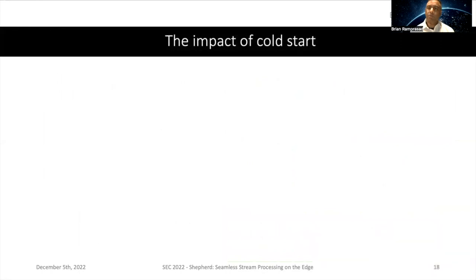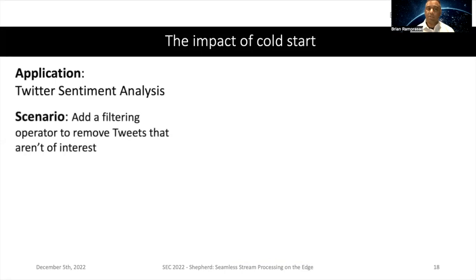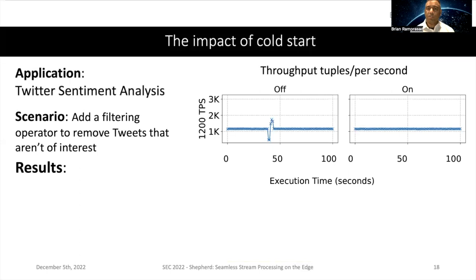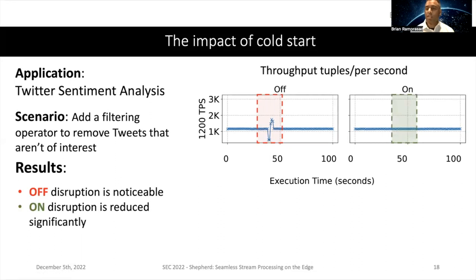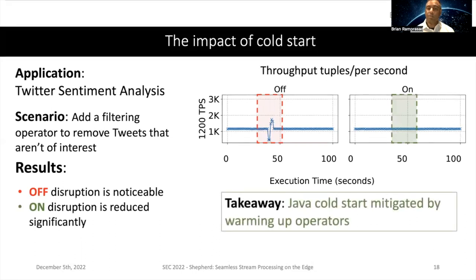Next, let's look at the impact of cold start. Using the Twitter application, our scenario adds a filtering operator to remove tweets that aren't of interest. With the warmup feature turned off, we see significant throughput disruption — at the 50 millisecond mark we get a drop followed by a spike. But if we warm up the operator first before sending data to it, it behaves like an operator that has been running all along and there is no throughput disruption. Java cold start can be mitigated by warming up operators.